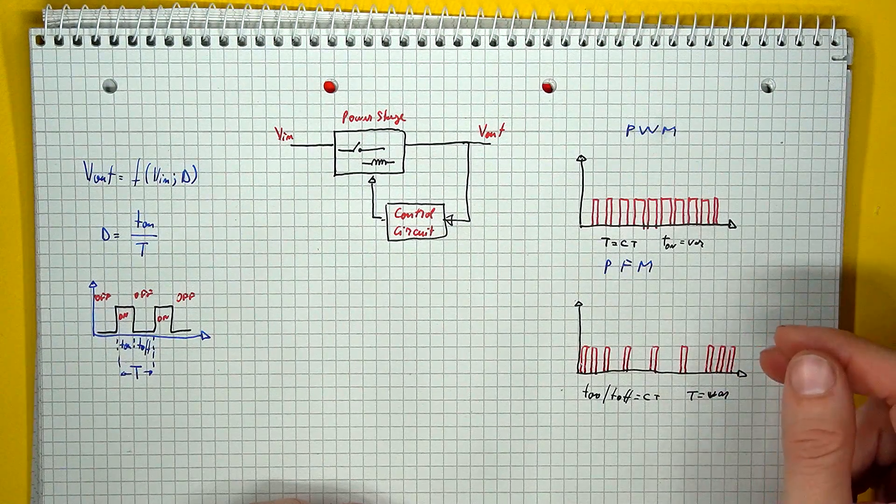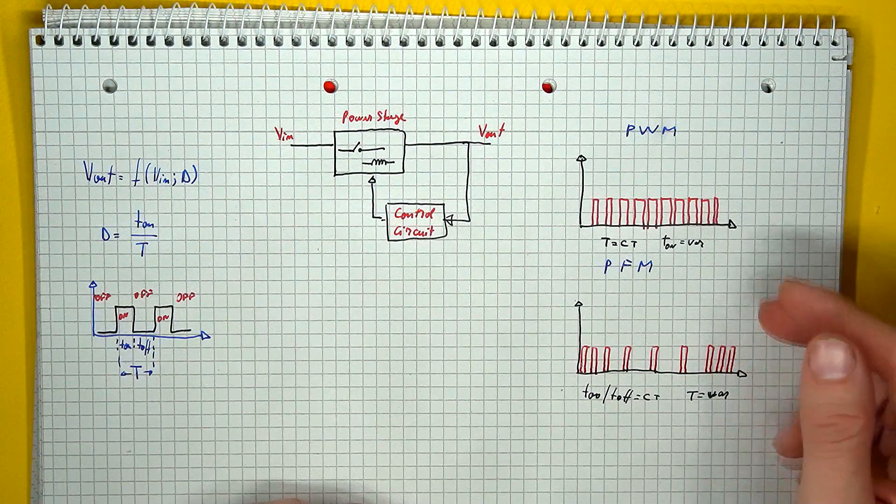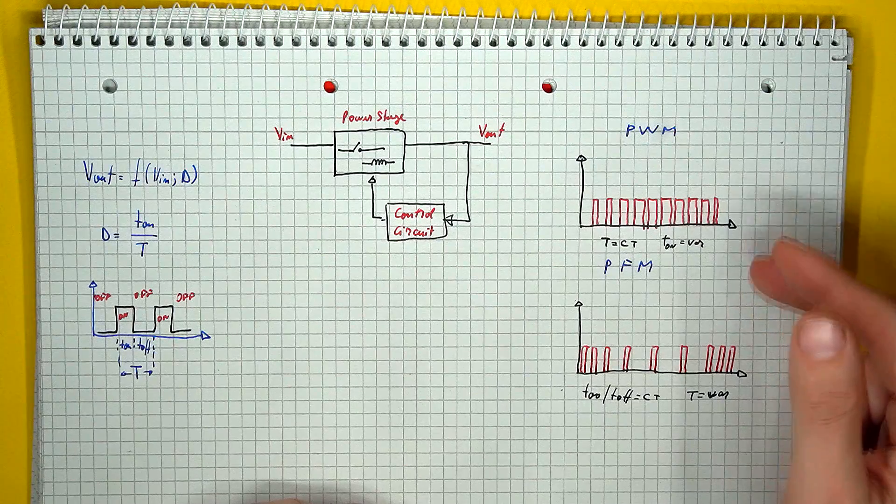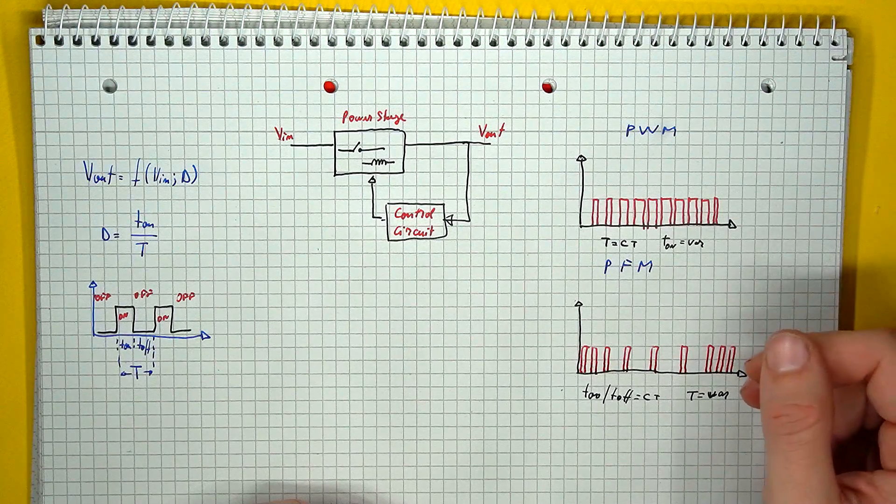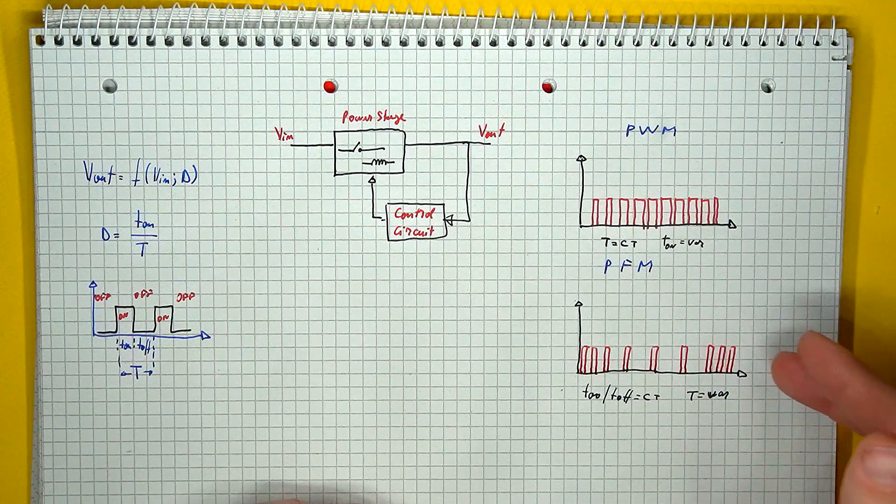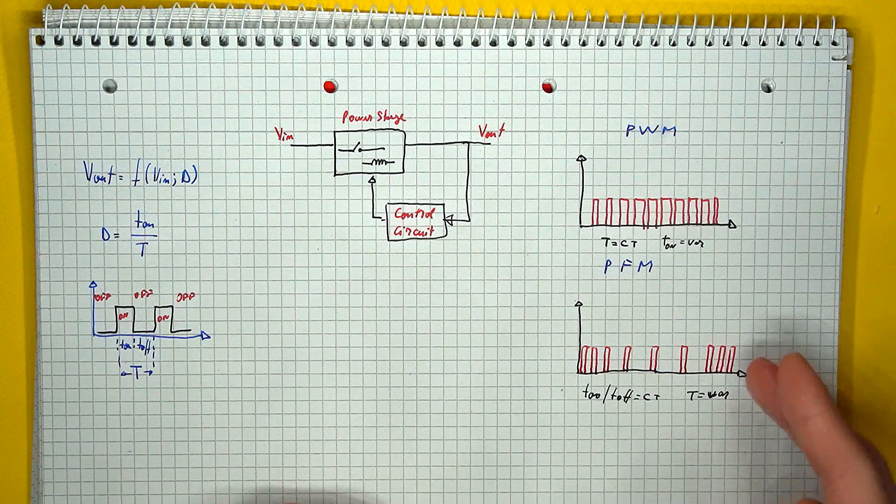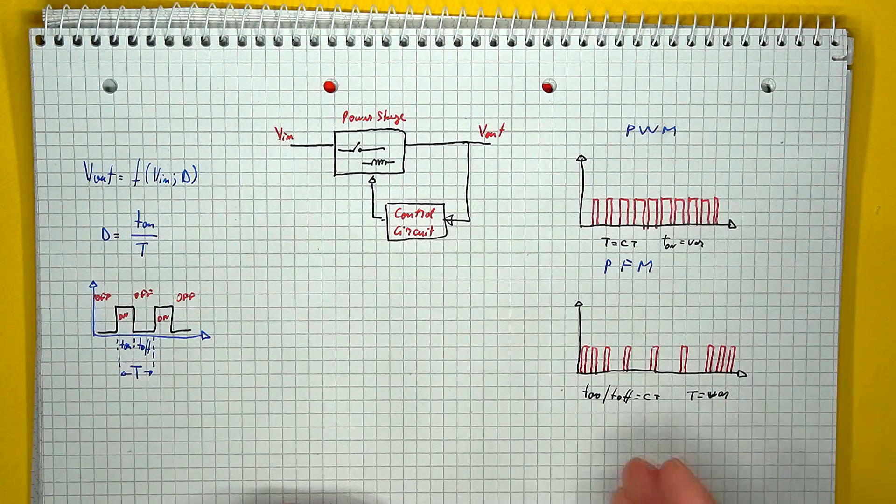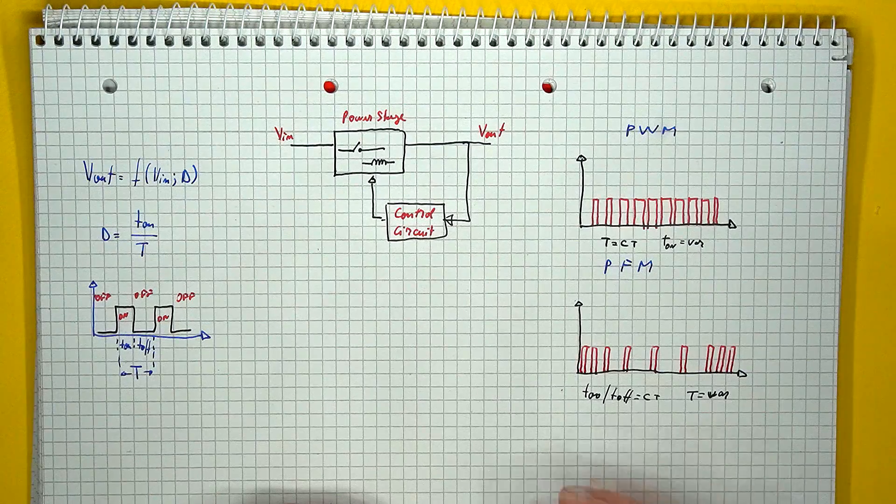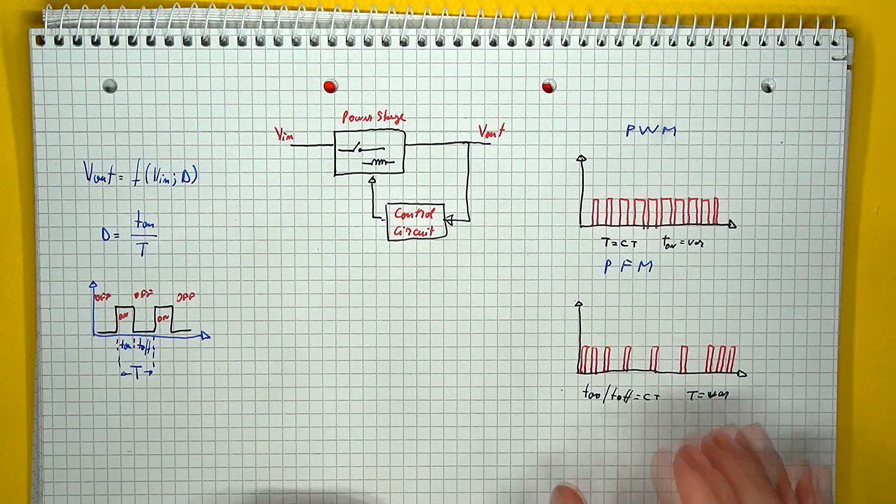With pulse width modulation, you keep the switching period and thus the switching frequency constant, and you just adjust the duty cycle strictly by modifying the on time, so the width of the pulse is being adjusted. While with pulse frequency modulation, normally you just adjust the switching frequency while keeping either the on or off time as constant. So the pulse width is being fixed, but the pulse frequency is being varied.